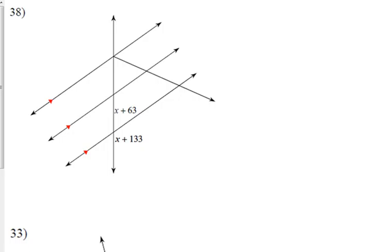This would be our transversal because our three parallel lines are moving up here. So the angles here are this angle right here. x plus 63 is representing this angle. Sometimes that can be a little difficult to determine. And x plus 133 is this angle. So what are those angles right there? They're adjacent or they're a linear pair. So when we add them together, x plus 63 plus x plus 133, what are we setting that equal to?